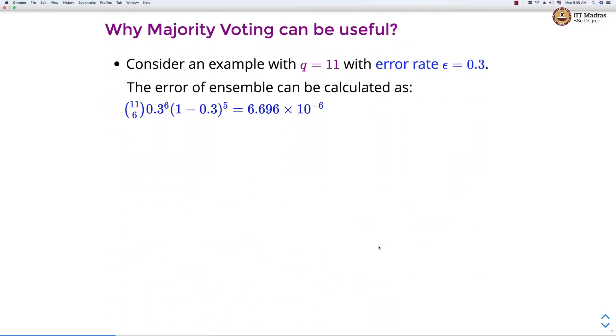Let's take an example where we are using 11 classifiers or 11 estimators, q equals 11 with error rate 0.3. The error of the ensemble then can be calculated as 11 choose 6, 0.3 raised to 6 into 1 minus 0.3 raised to 5. This comes out to be 6.696 times 10 raised to minus 6, which is a smaller value.